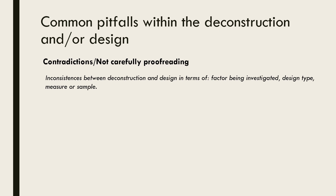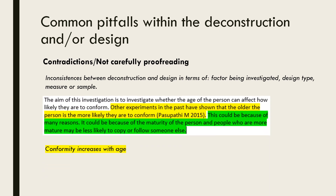The last common pitfall we're going to discuss briefly is the presence of contradictions due to inadequate proofreading. This often occurs between the deconstruction and design — for example, the factor chosen in the deconstruction is not the factor being investigated in the design, or there are differences between these two sections in relation to the design type, measure or sample being used. Sometimes contradictions also happen within the same section. Here we have a contradiction that occurs in two consecutive sentences: the student states that conformity increases with age, yet then immediately says that people who are older and more mature may be less likely to conform. Mistakes such as these are easily avoided with careful proofreading and cross-checking what you have written in different sections.